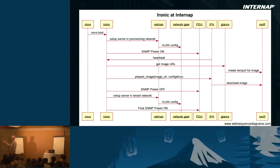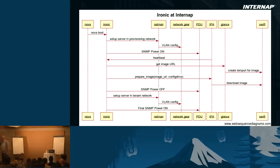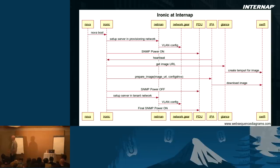What we're trying to do is boot an image: it will fetch the image from Swift through Glance, write it onto the hard disk, and turn it off. Ironic knows the installation is completed and simply asks Netman to move the server to the tenant networks. Netman interfaces the networking gear again. At the end, there's a final power-on where the machine boots in the tenant networks, properly configured with a config drive. After three or four minutes, it will start pinging.